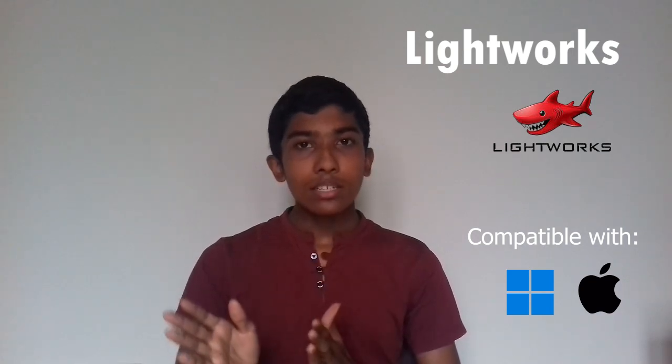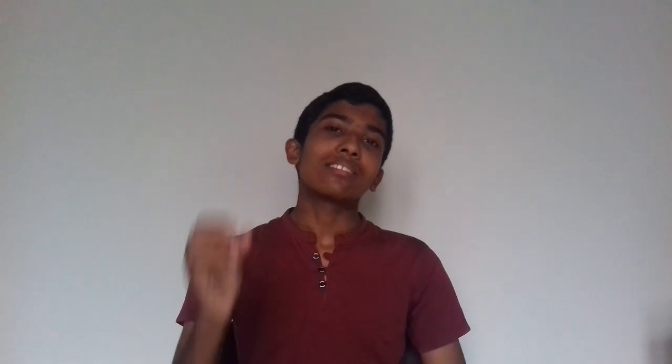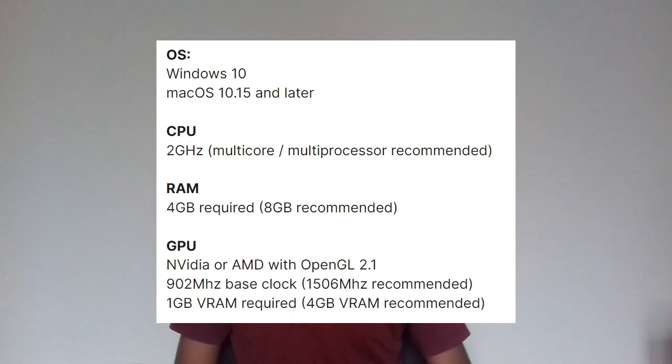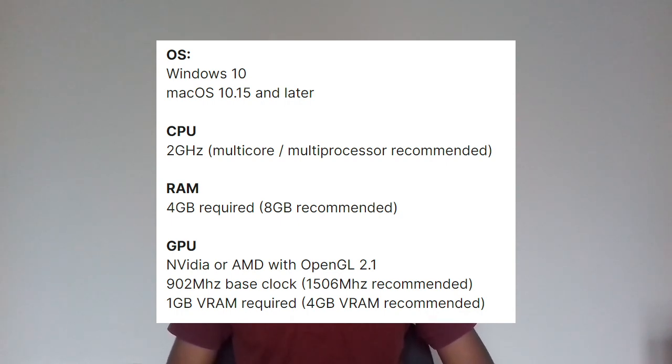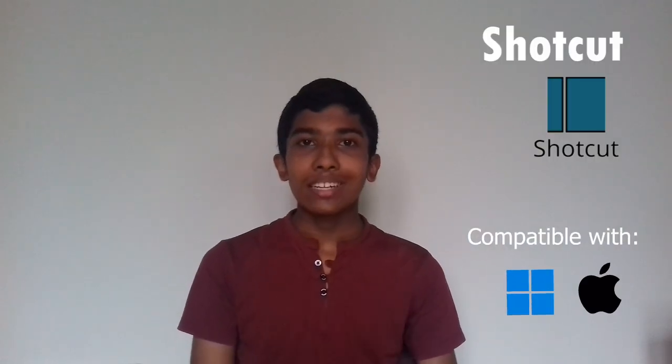Our first alternative is Lightworks. Lightworks is a simple video tool that can run on any computer. The system requirements are: Windows 10 minimum OS, processing speed of at least 2GHz, and RAM of at least 4GB. This is a free alternative — all 5 of the software on our list are free.